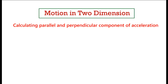What does that mean? It means you decompose the acceleration in the direction of velocity, or parallel to velocity, and perpendicular to the velocity. For example, if I have an object moving on a path, at a certain point in time this object is at point P. The direction of velocity is tangent to the path, so this is the direction of velocity.